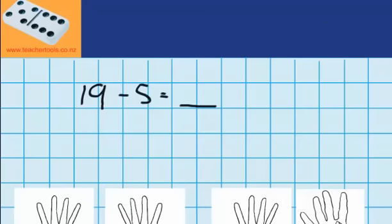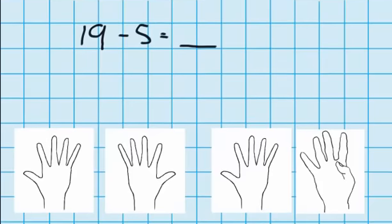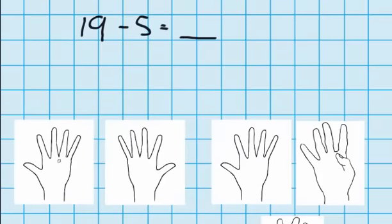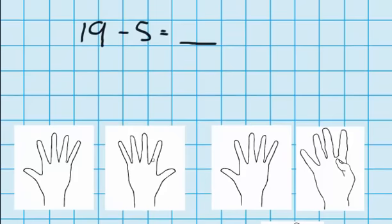Well, I want to start by showing 19 using fingers. So you can see I've used my fingers and I've had to use somebody else's as well. So over here I've got 10 fingers. Here I've got five fingers and here I've got another four. So in total I've got 19 fingers up here.